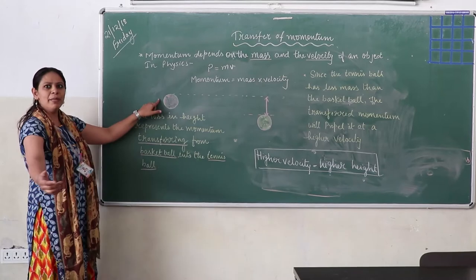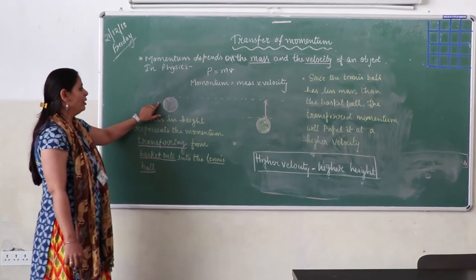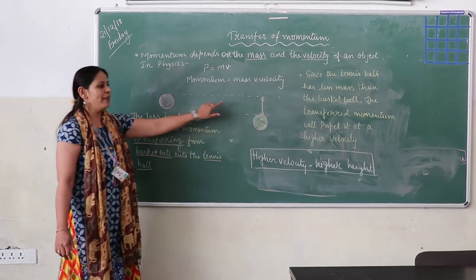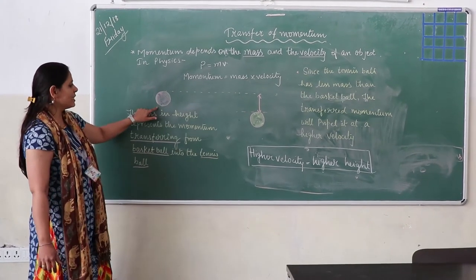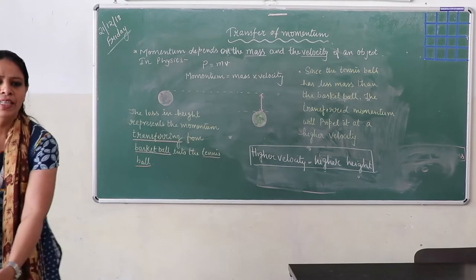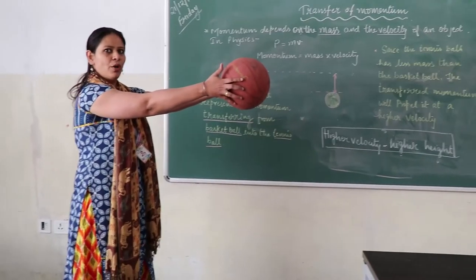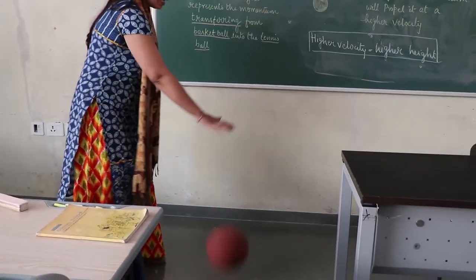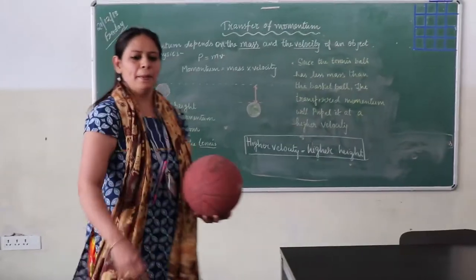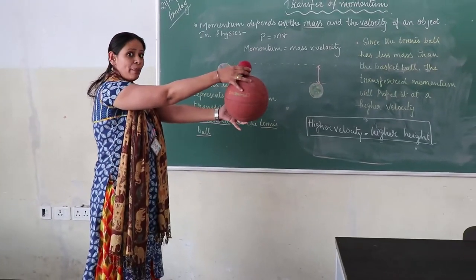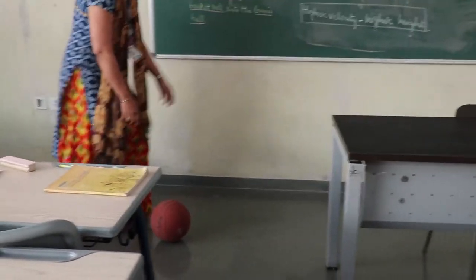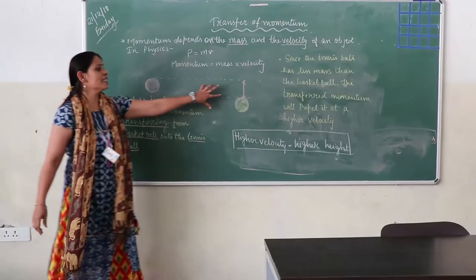Now, in the experiment I have shown you, you can see the difference in the height of the ball when the tennis ball is kept over the basketball. In the first case, you see the height the ball bounces back. Now, in the second case, you see the height the basketball bounces back — there is a loss in the height.